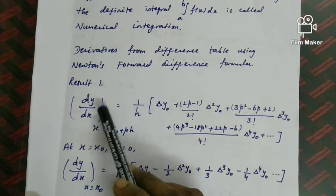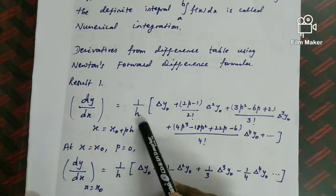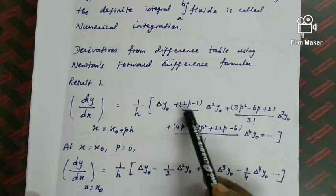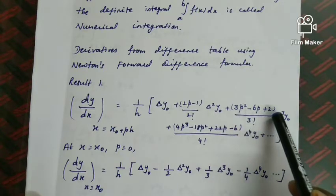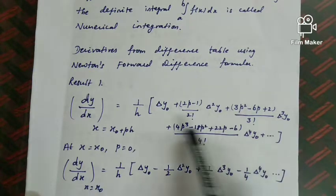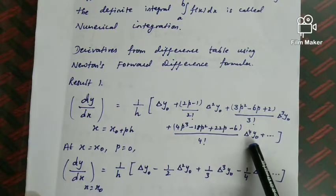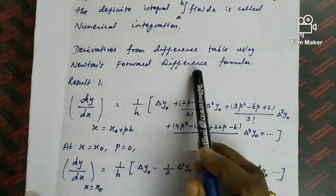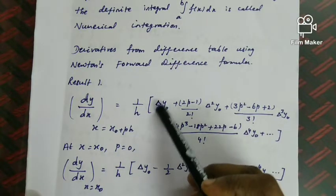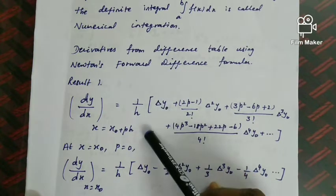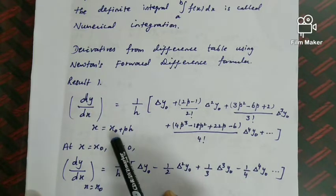The first result: dy/dx at the point x = x₀ + ph is equal to (1/h)[Δy₀ + (2p−1)/2! · Δ²y₀ + (3p²−6p+2)/3! · Δ³y₀ + (4p³−…) · Δ⁴y₀ + …]. Here Δy₀, Δ²y₀, Δ³y₀, Δ⁴y₀ are all values from the forward difference table, taken from the beginning of the table. Substitute these into the formula to find dy/dx.